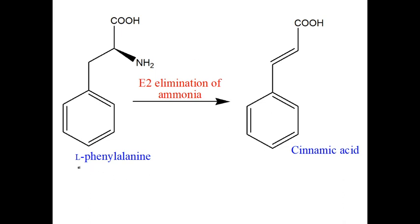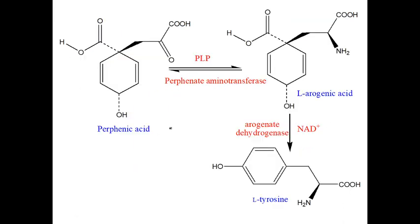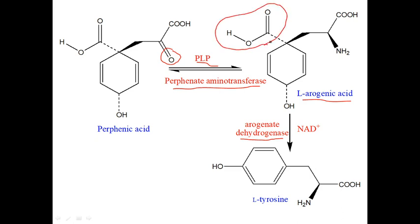L-phenylalanine can also form cinnamic acid: if E2 (bimolecular elimination) of ammonia occurs — the NH2 group and a hydrogen are removed — a double bond is created, producing cinnamic acid. For the synthesis of L-tyrosine: prephenic acid in the presence of pyridoxal phosphate and prephenate aminotransferase has an amino group transferred to the keto position, forming L-arogenic acid. Then arogenate dehydrogenase facilitates decarboxylation, and L-tyrosine is formed.